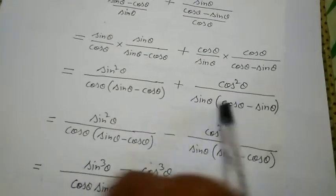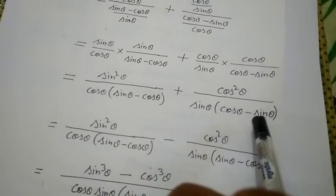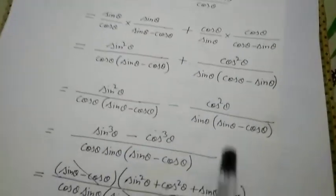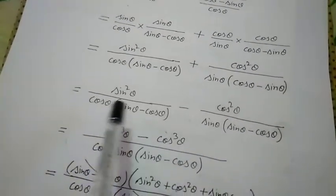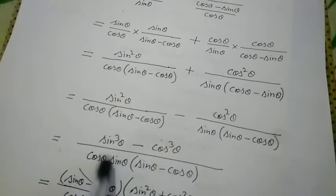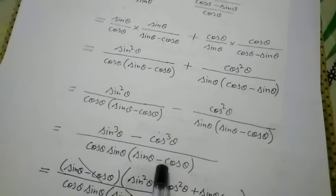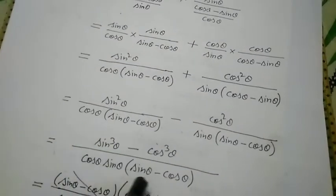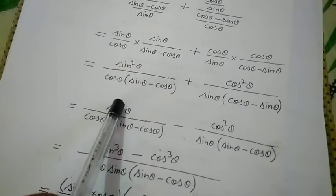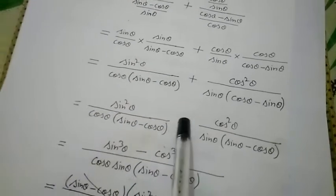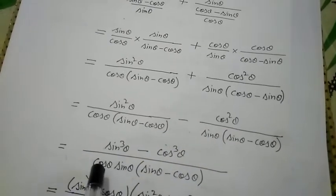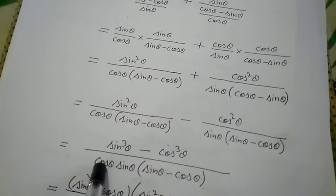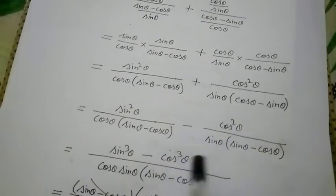Taking minus common from (cos θ − sin θ) makes it −(sin θ − cos θ), which flips the plus sign in the numerator to minus. Now both brackets are (sin θ − cos θ), so we take LCM as cos θ · sin θ · (sin θ − cos θ). After cancellation: the first term yields sin³ θ in the numerator; the second term (with the minus absorbed) yields −(−cos³ θ) = +cos³ θ. So the numerator becomes sin³ θ + cos³ θ (wait — with the minus sign: sin³ θ − cos³ θ... let us re-read: we get sin³ θ minus cos³ θ divided by sin θ · cos θ · (sin θ − cos θ)).